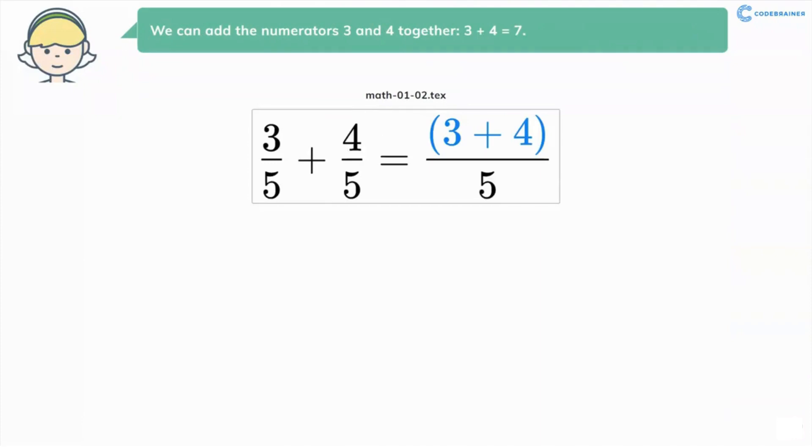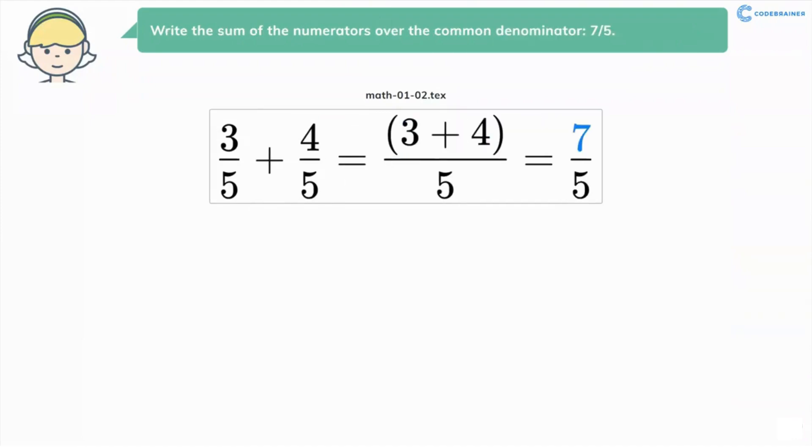We can add the numerators 3 and 4 together. 3 + 4 = 7. Write the sum of the numerators over the common denominator, 7/5.